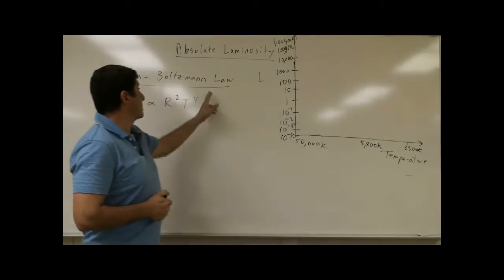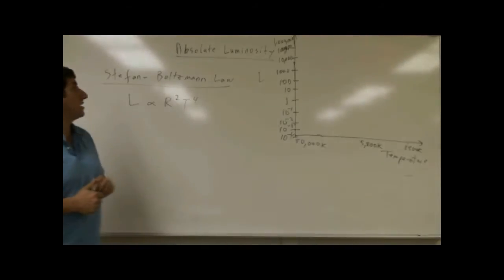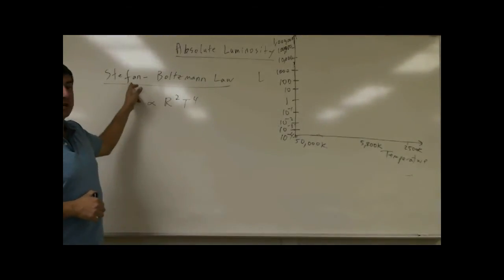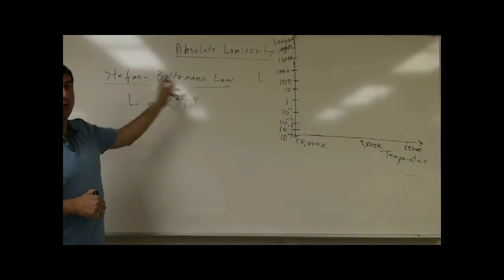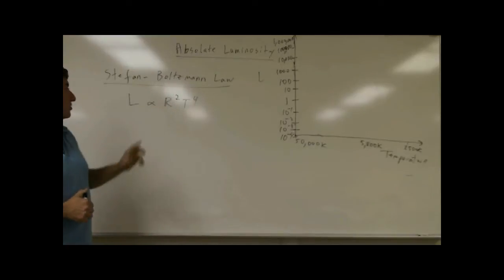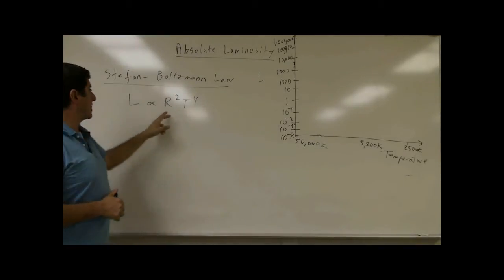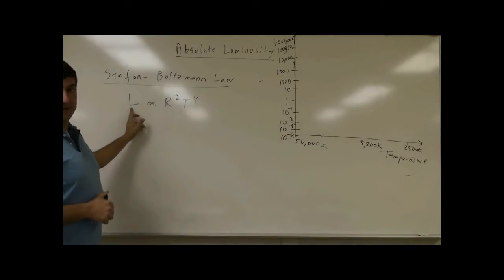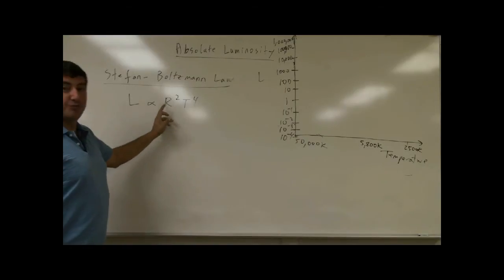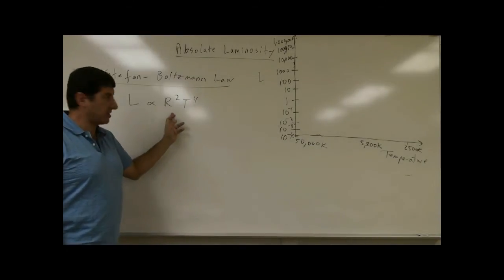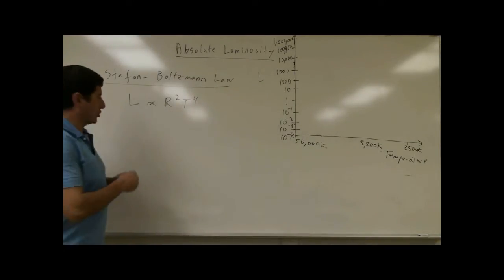To continue the lecture on absolute luminosity, we will talk about the Stefan-Boltzmann law. The Stefan-Boltzmann law connects the luminosity of a star to how big it is — its radius — and its temperature.